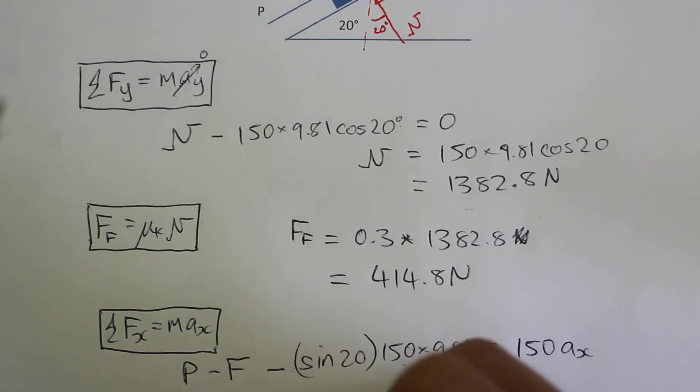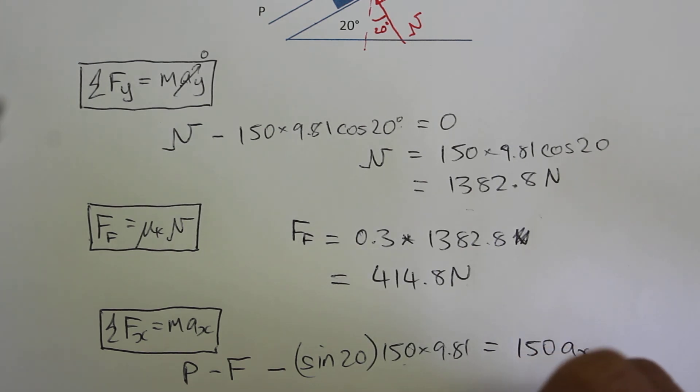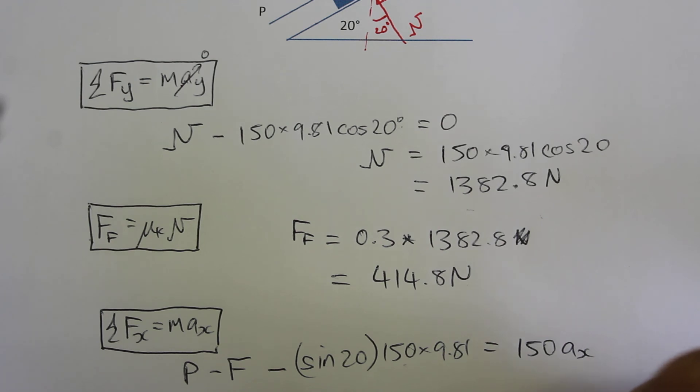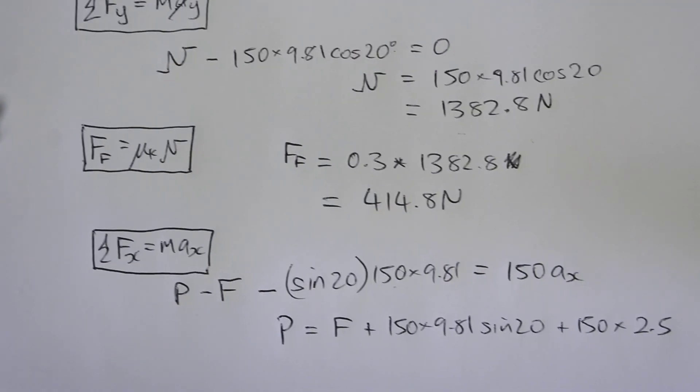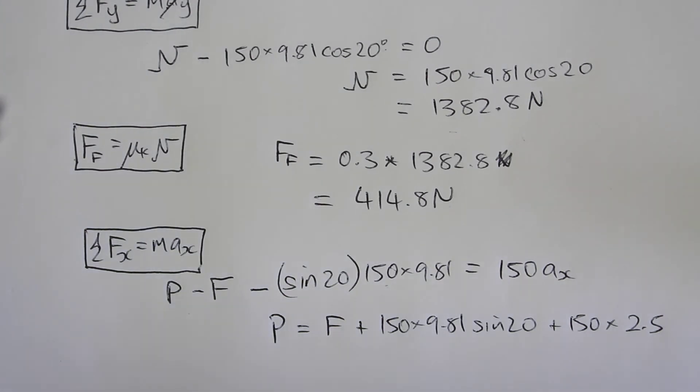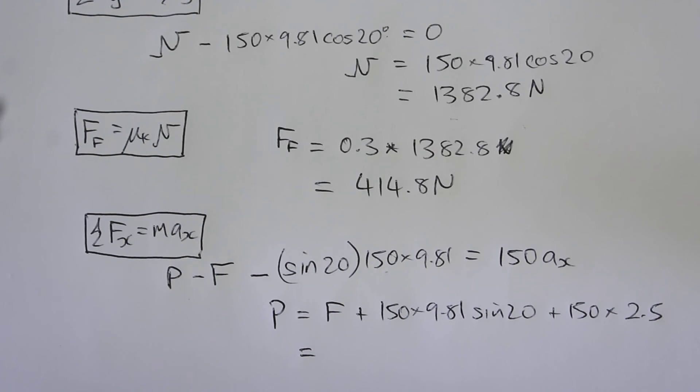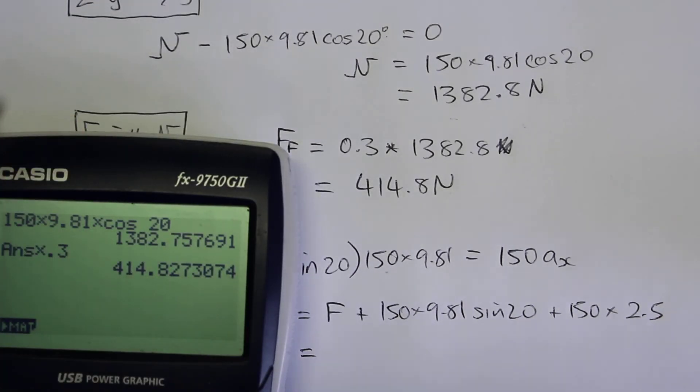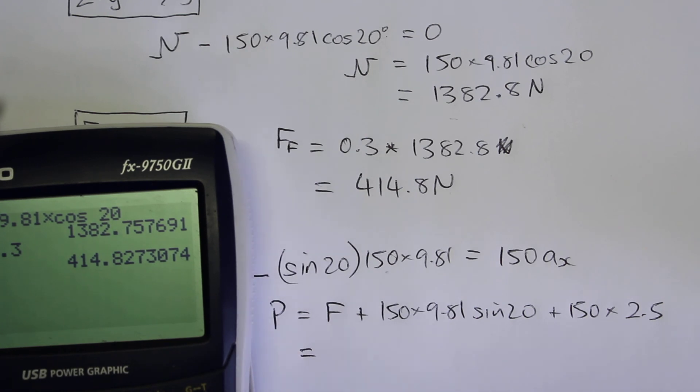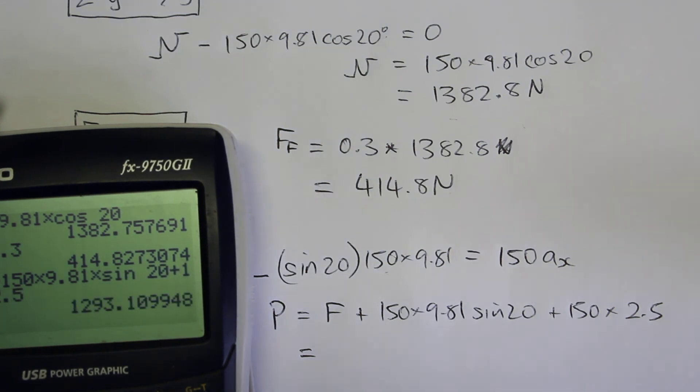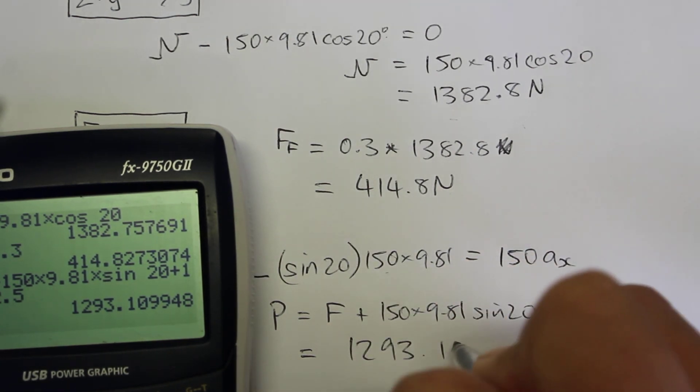And we can rearrange here. So P equal to F plus 150 times 9.81 times sine 20 plus 150 times A x, which was given as 2.5. So F was 414.8 plus 150 times 9.81 times sine 20 plus 150 times 2.5 and we get 1293.1 newtons.